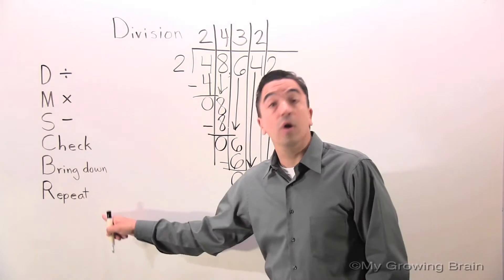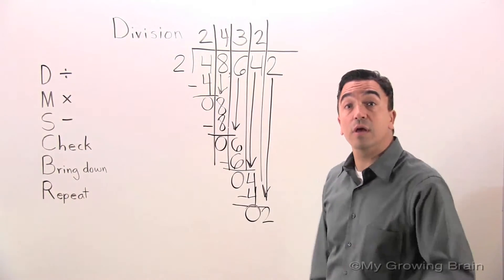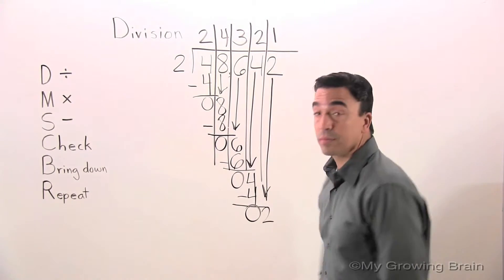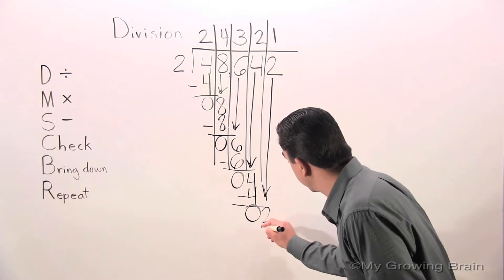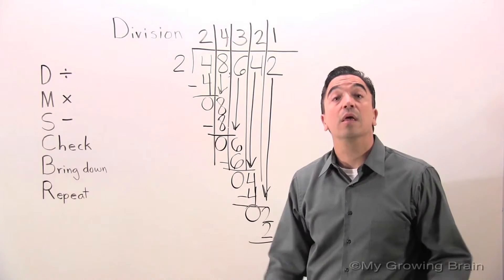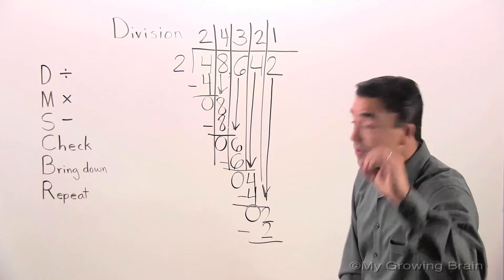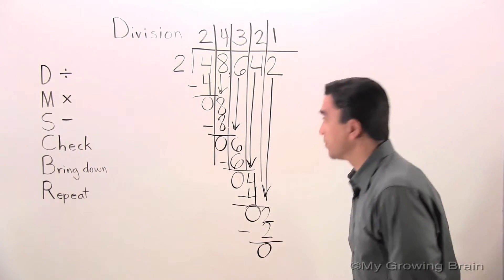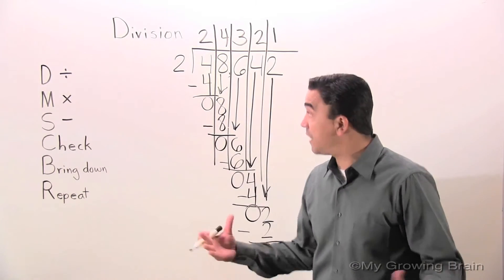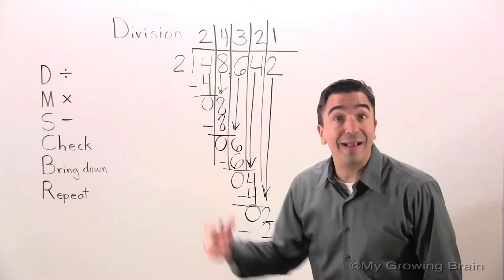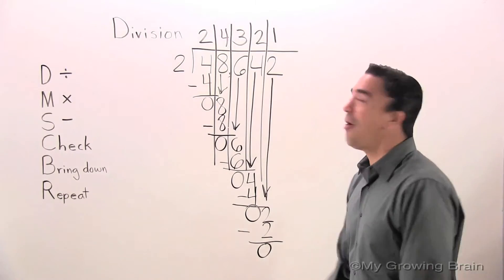2. Repeat the process. All the way back to divide. 2 divided by 2 is 1. Multiply. 2 times 1 is 2. Next step: subtract. 2 minus 2 equals 0. Next step: check. 0 is less than 2. Therefore, bring down. There's nothing there. We're done.